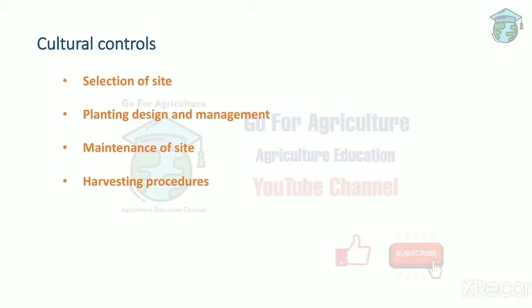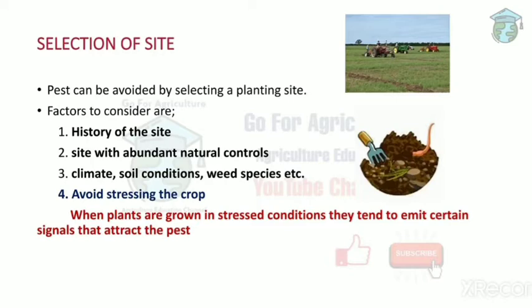Starting with selection of the site: pests can be avoided by selecting a proper planting site. There are four factors to consider — first, history of the site; second, site with abundant natural controls; third, climate, soil conditions, and weed species; and fourth, avoid stressing of the crop.